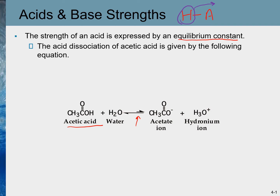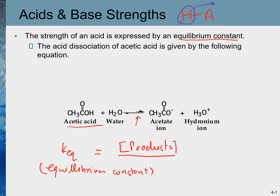In general, the equilibrium constant in any reversible reaction can be written by this equation. Keq, the equilibrium constant, is equal to the concentration of products divided by the concentration of starting material or reactants. This is a general equation to calculate the equilibrium constant in any reversible reaction.